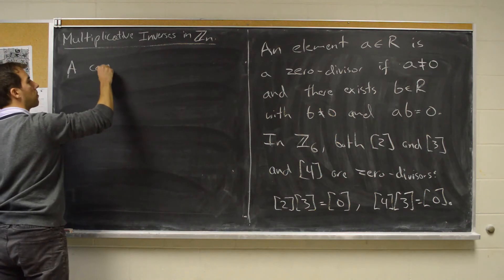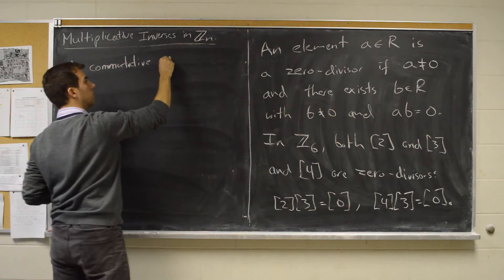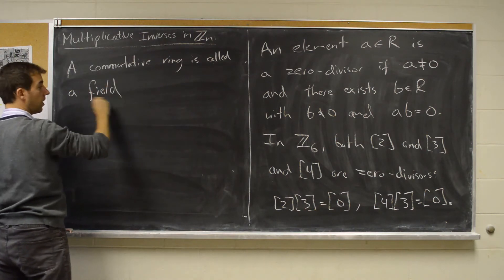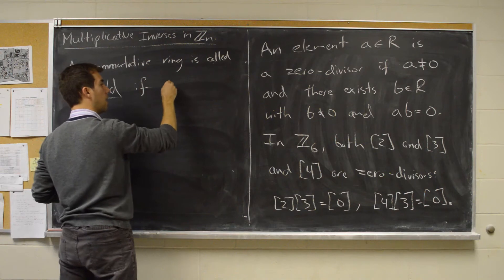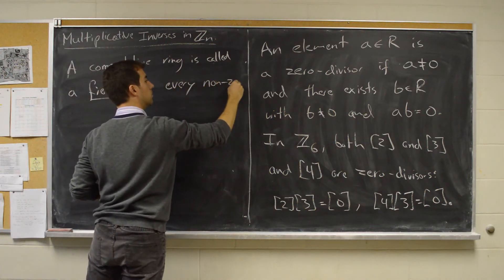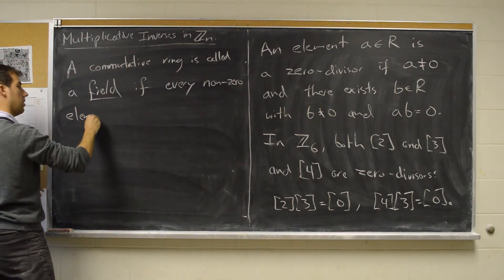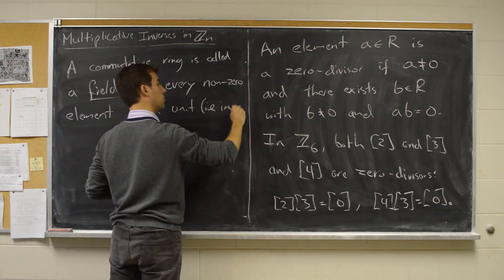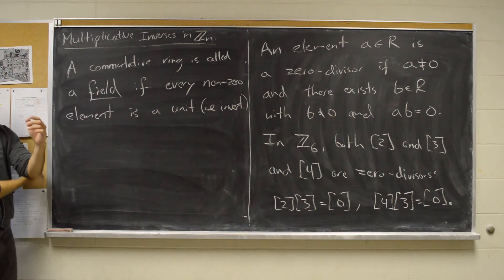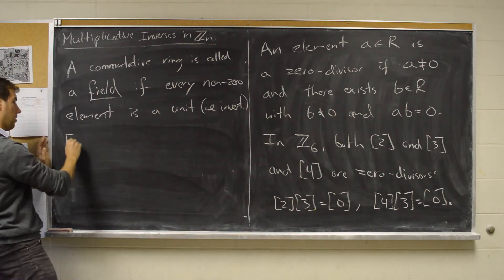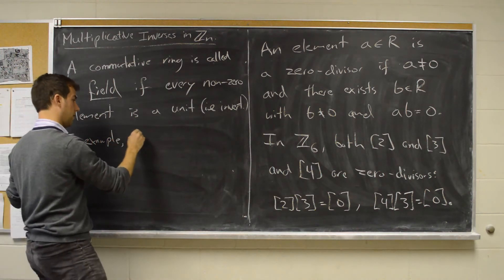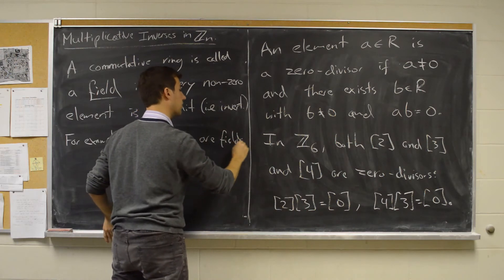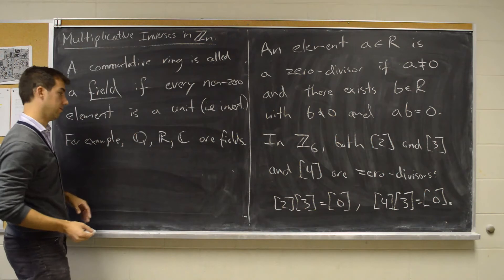A commutative ring is called a field — this is the definition of a field — if every non-zero element is a unit, that is to say, invertible. Examples of fields that you know from linear algebra: your rationals, your reals, your complex numbers. These are commutative rings with the additional property that everything but zero has a reciprocal — a multiplicative inverse.